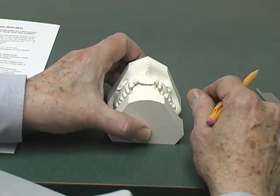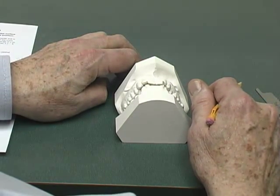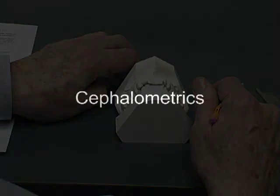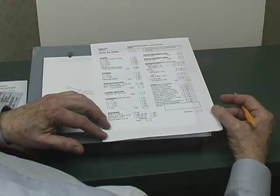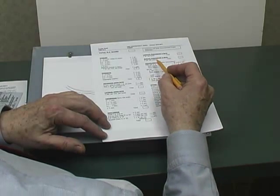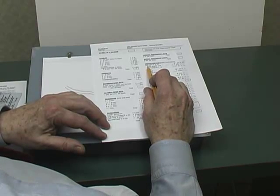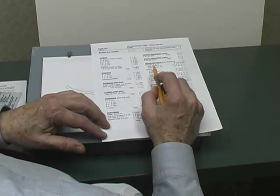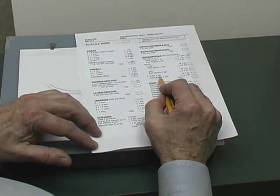Now we've gone through eight categories that measure complexity of the dental malocclusion as seen on the pretreatment casts. Let us move to the cephalometrics category. On the DI form, this category measures three entities: A and B angle, SN to mandibular plane, and the angle of the lower incisor to mandibular plane.